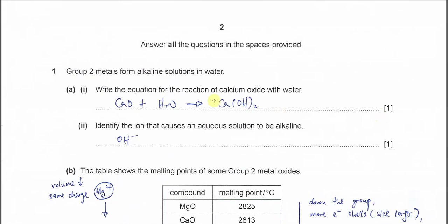Group 2 metals form alkaline solutions in water. Part A, Part 1: write the equation between calcium oxide and water. Calcium oxide with water forms calcium hydroxide. No gas is formed, just one compound.